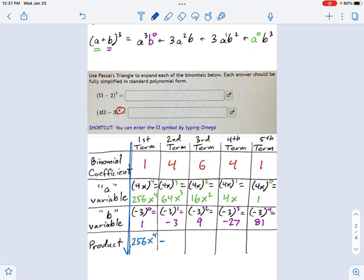So that's going to be negative 768x cubed. And this next one, this is going to be 6 times 16 times 9. So that's 864x squared. The 4th term is going to be 4 times 4 times negative 27. Okay, now the numbers are coming back down again.